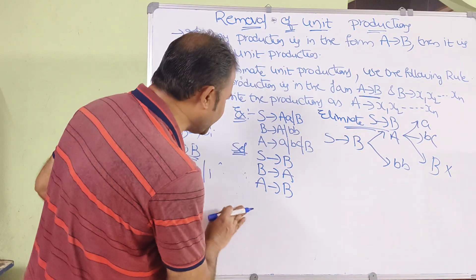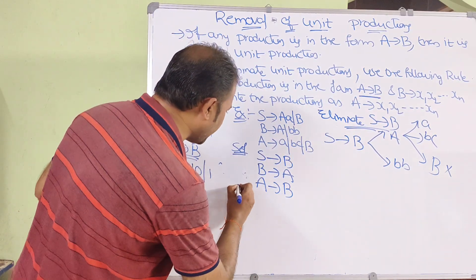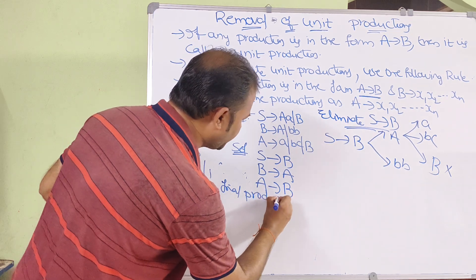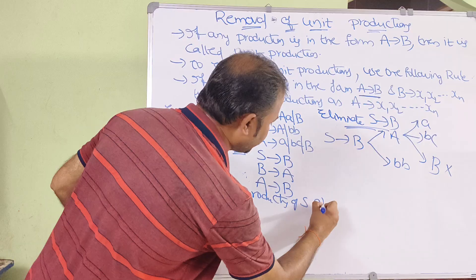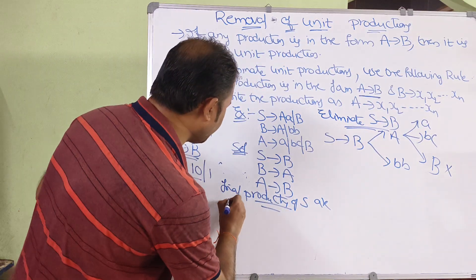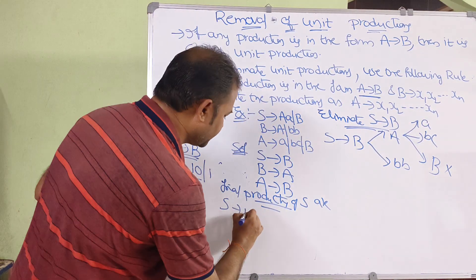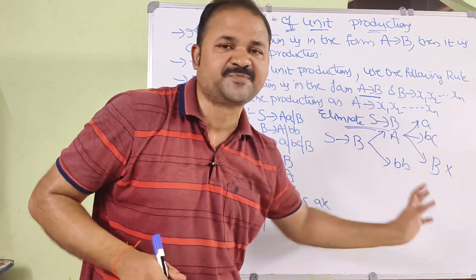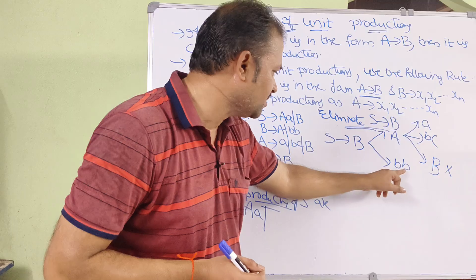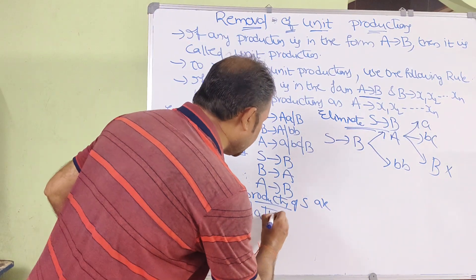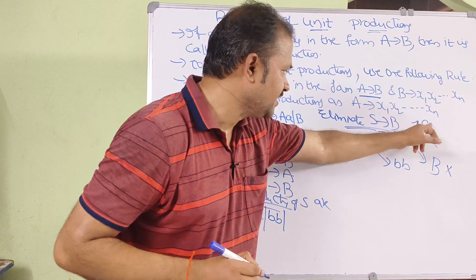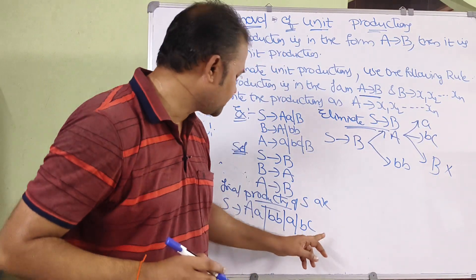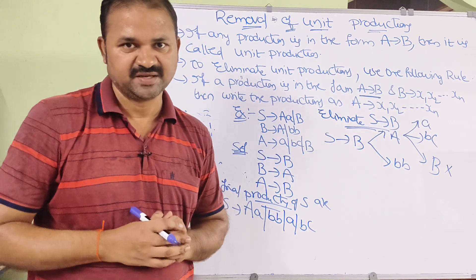After eliminating S implies B, the final productions of S are: initially we have A (from S implies A), and from substituting B's productions we get A, b, and then from A's productions we get AA, R, and BC. These are the final productions of S.